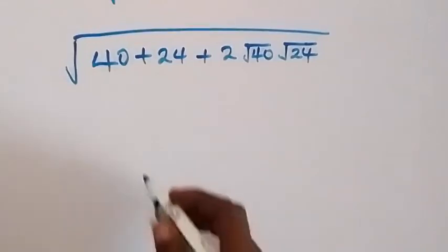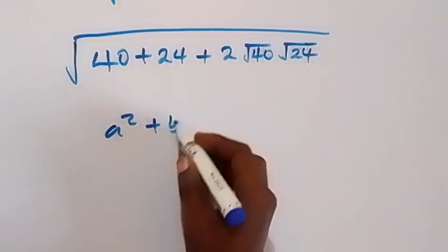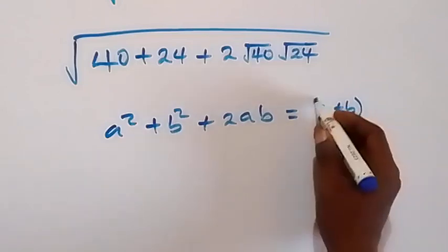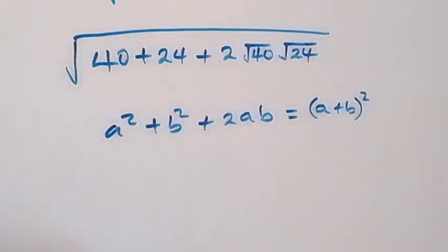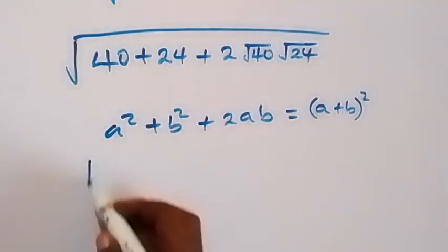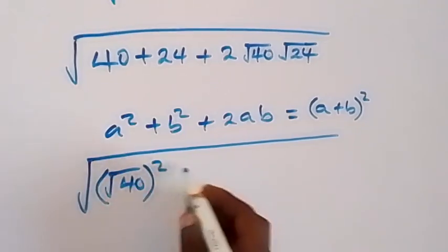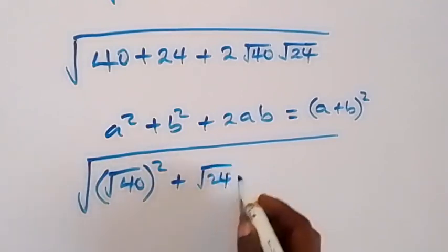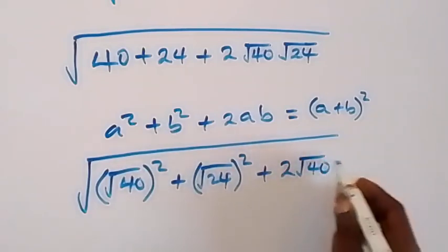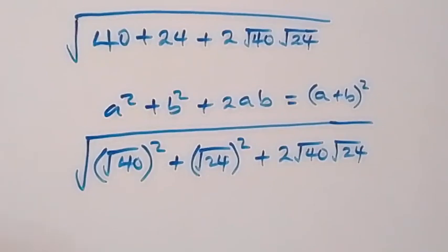When we have a squared plus b squared plus 2ab, this is the same thing as (a plus b) squared. We can now rewrite what we have: 40 can be written as root 40 squared, and 24 can be written as root 24 squared. So this becomes square root of root 40 squared plus root 24 squared plus 2 root 40 times root 24.